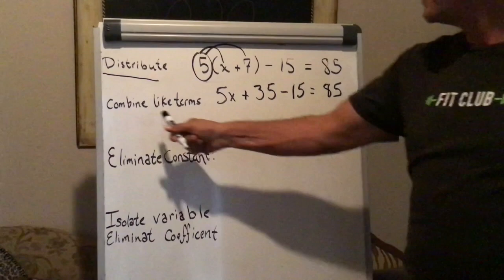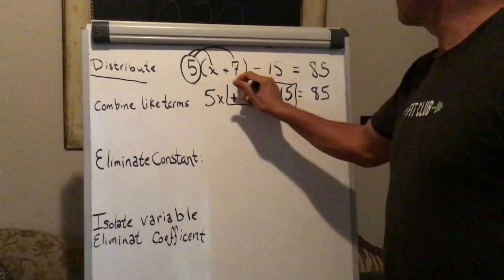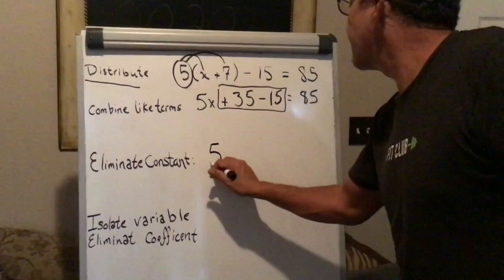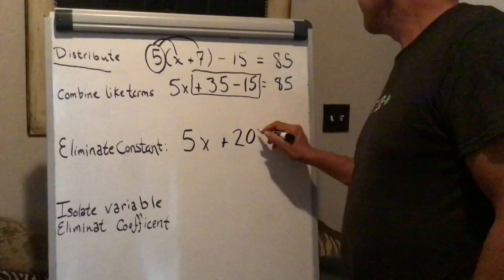Next step, I must combine like terms. If I take a look here, 35 and negative 15. I'm going to combine them. So we have 5x plus 20 is equal to 85.